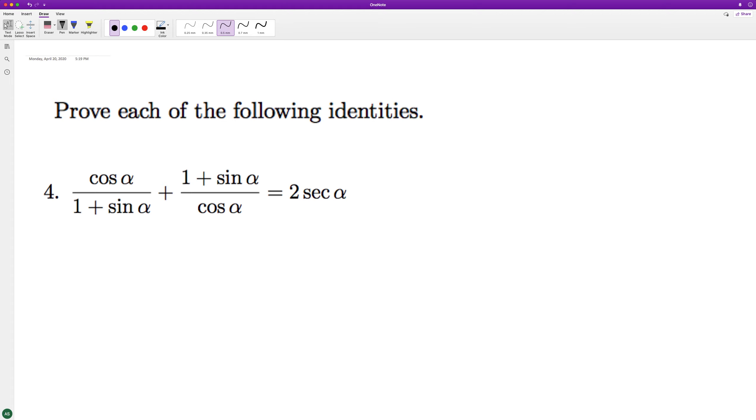To prove this identity, that the left side equals the right, we need to get a common denominator here and simplify things. So we get cosine squared alpha plus 1 plus sine alpha squared. I'm just dealing with the numerator now.